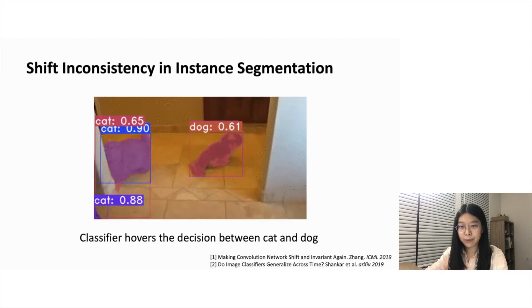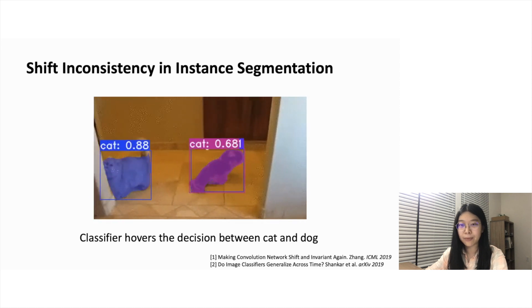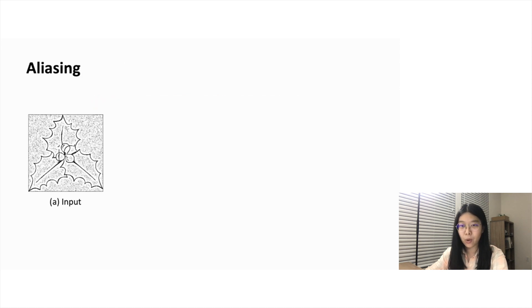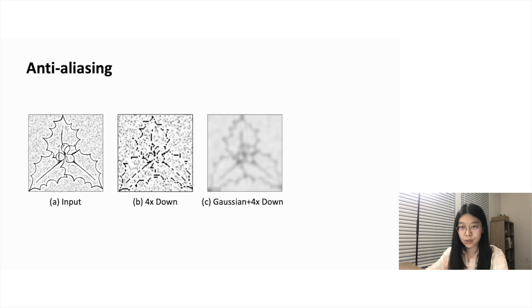It is very unlikely for humans to have different decisions on the same object. However, in convolutional neural networks, this observation exists. It could be partially attributed to aliasing when the feature map is downsampled. We use a toy example to illustrate aliasing and its potential solution. Aliasing refers to the phenomenon that high-frequency signals degenerate into completely different ones after sampling. The standard solution is to apply a low-pass filter before downsampling.